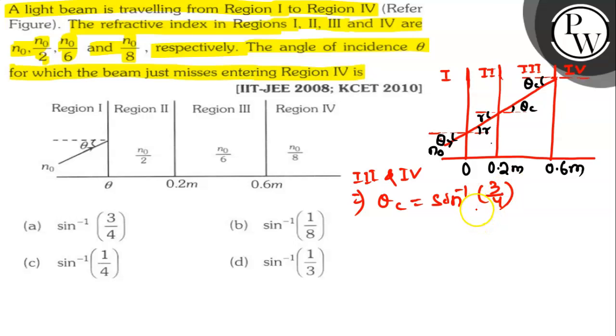So, for the interface of region 2 and 3, it is n0 by 2 into sin r which is n0 by 6 sin θc.